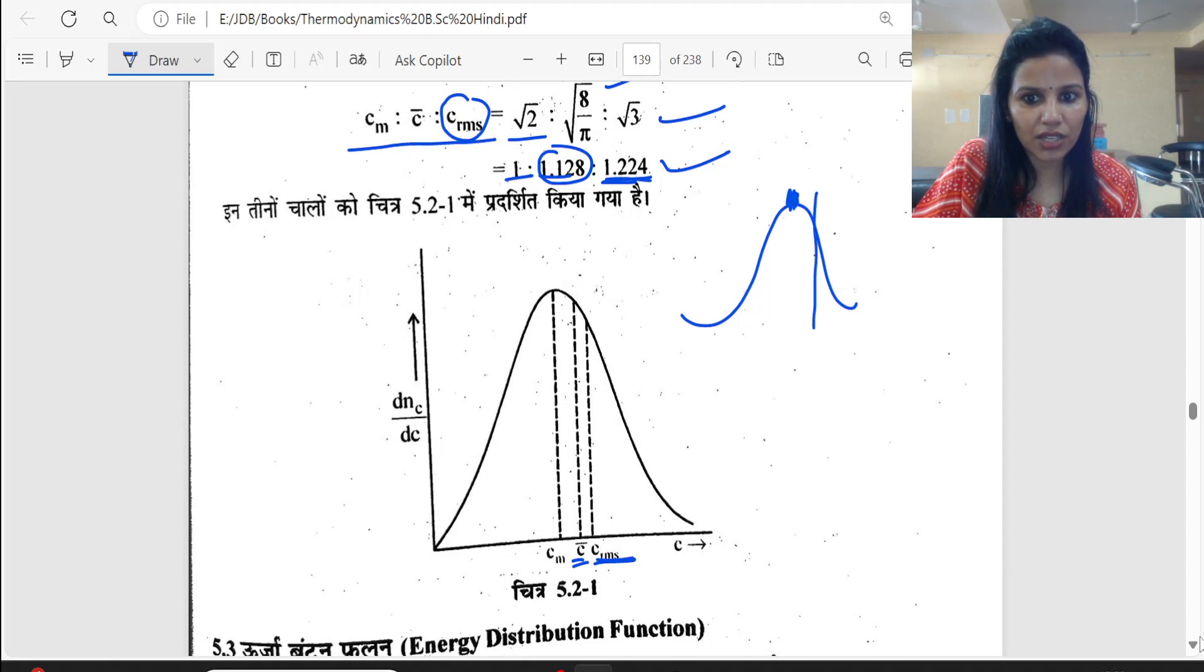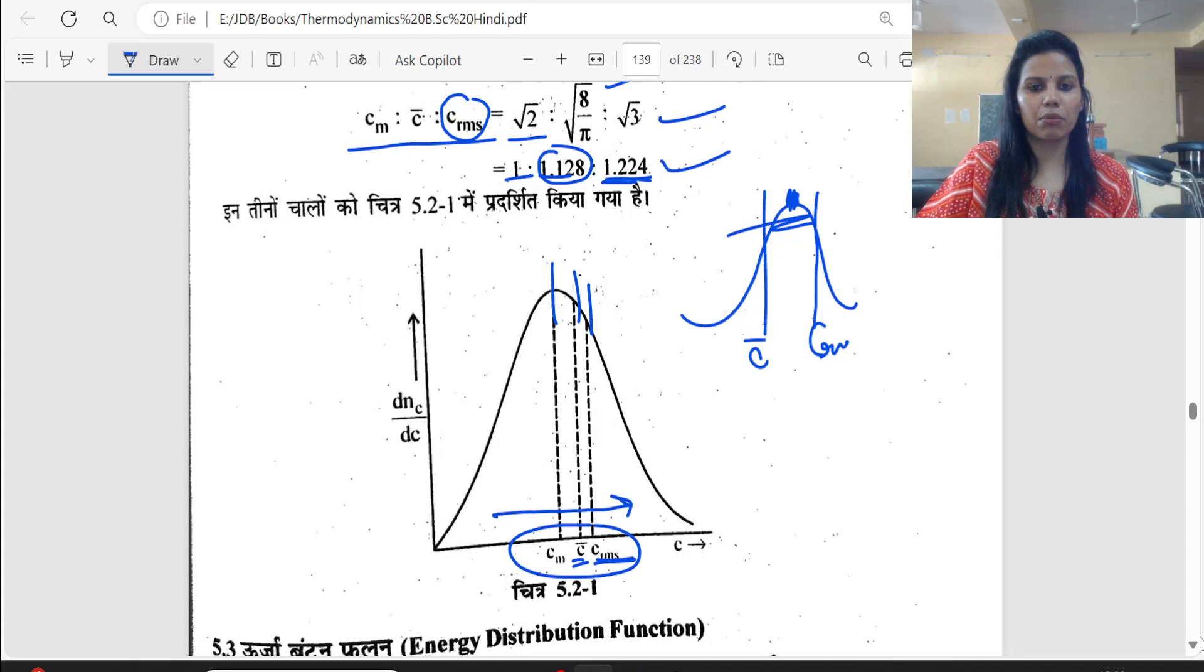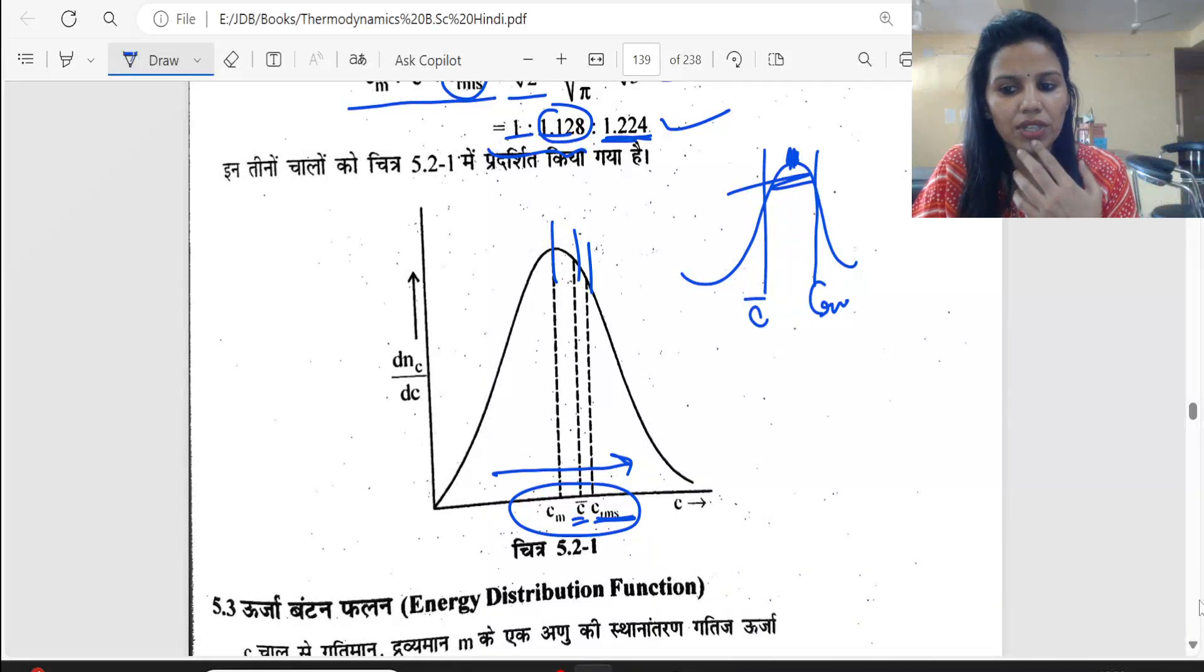Most probable will be here at the peak. Then here will be C rms, and behind it will be C average. C rms here, C average behind it. The sequence is on this side - C is increasing. These are the applications in terms of their speed.